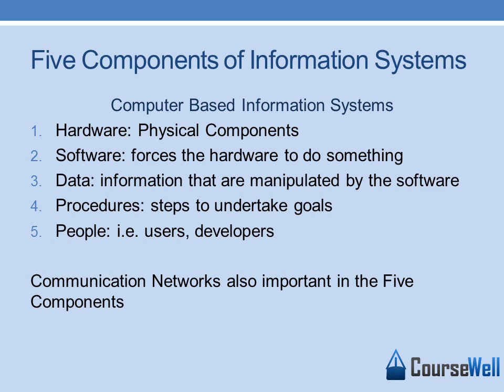Third is data — the information that is manipulated by the software. Fourth are procedures or policies, which are the steps taken to undertake goals. Fifth are the people, considered users and developers. Communication networks are also important and are somewhat considered part of the hardware within the five components of the information system.